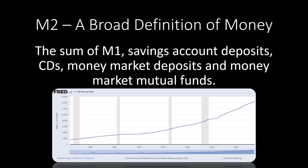A broader definition of money is called M2. That's the sum of M1, savings account deposits, some cash deposits, money market deposits, and money market mutual funds. What's important to understand is that M2 includes M1 plus savings accounts and these other types of assets.